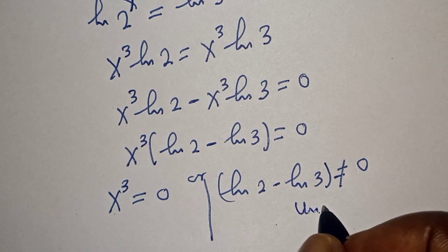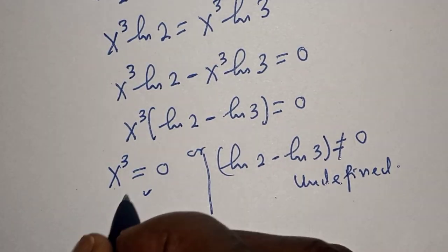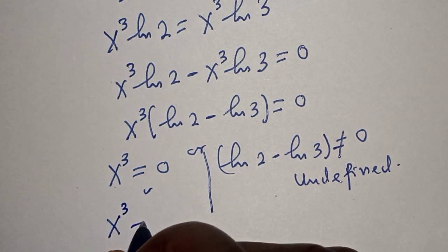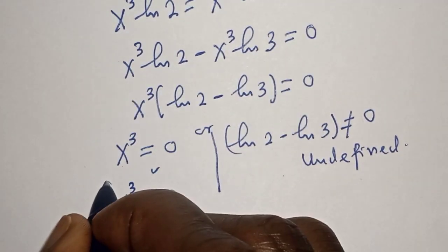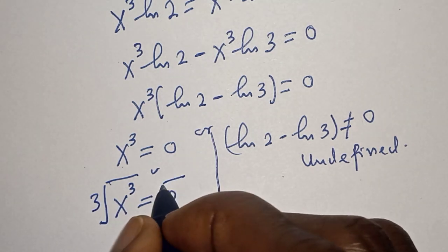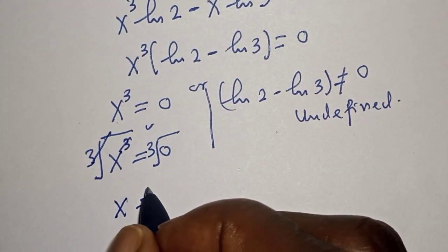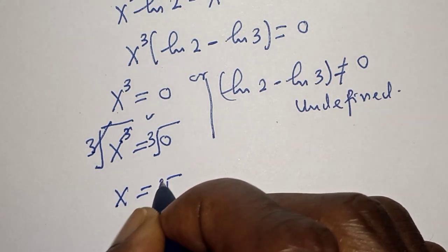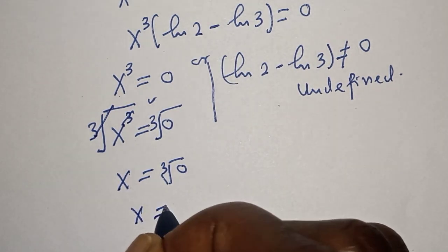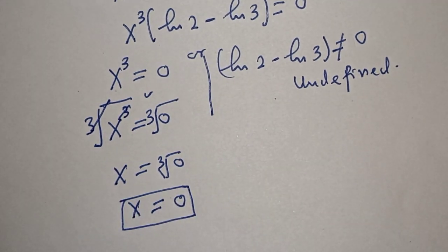That second case is undefined, so we work with s³ equals 0. Taking the cube root of both sides, the cube roots cancel and s is equal to the cube root of 0, which equals 0. Therefore s equals 0, and that is our final answer.